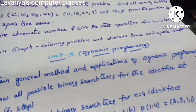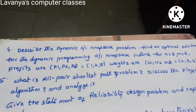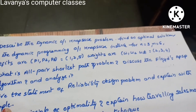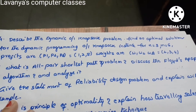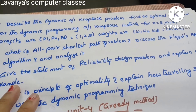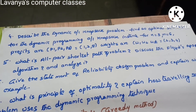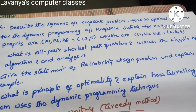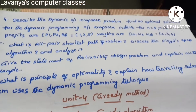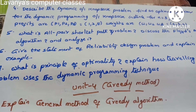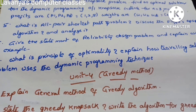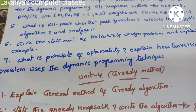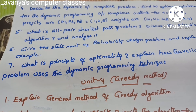Important questions include: discuss the dynamic programming 0/1 knapsack problem and find the optimal solution, along with a given problem instance. What is the all-pairs shortest path problem? Discuss Floyd's algorithm and analyze it. Give the statement of the reliability design problem and explain with an example. What is the principle of optimality? Explain how the Travelling Salesman Problem uses dynamic programming. In Unit 3, the important topics are the Travelling Salesman Problem, 0/1 knapsack, and all-pairs shortest paths.